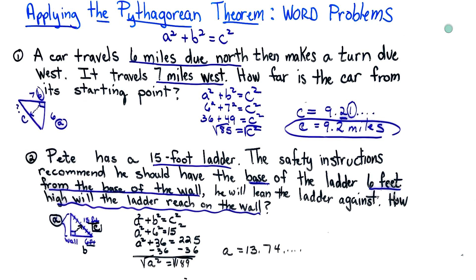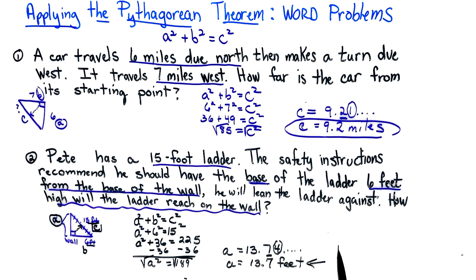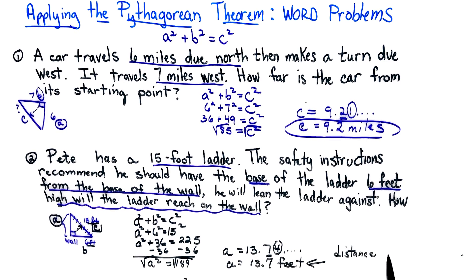When I do that, I get a equals 13.74 and it continues, but again the directions asked for it to be rounded to the nearest tenth. I am going to look at my seven, I have a four there, so my a is going to round to 13.7 feet. This is the distance up from the ground.